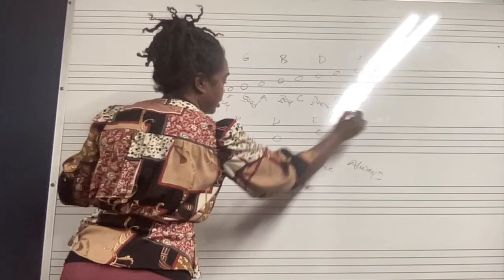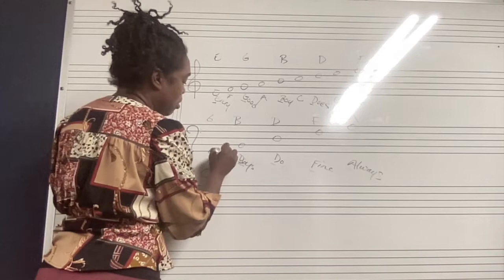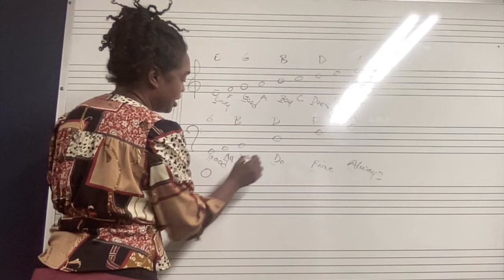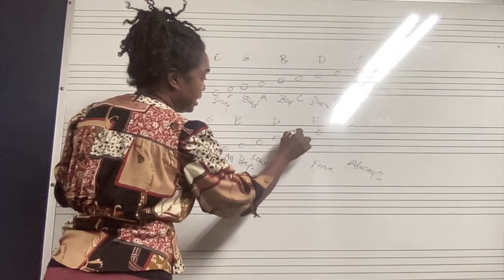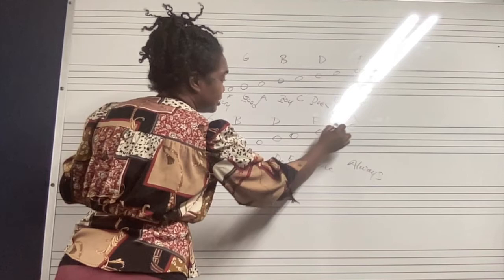And then for the spaces of this one, I was told to do 'all cows eat grass.' So all - that's an A. Cows - C. Eat - E.